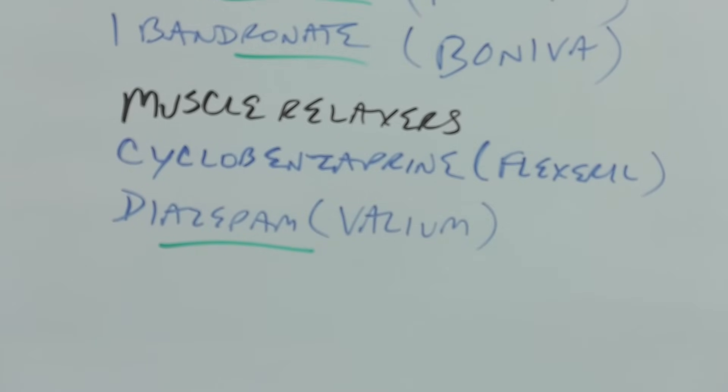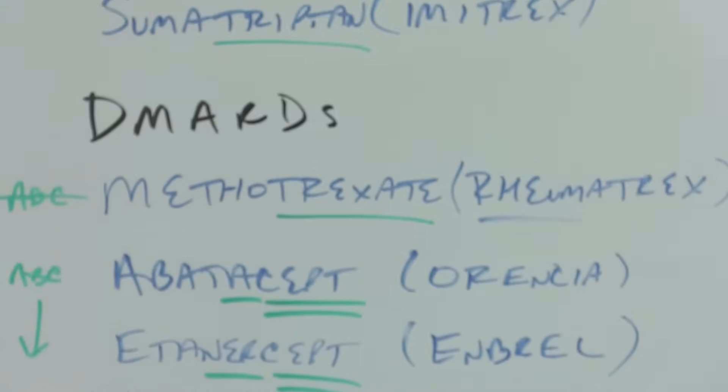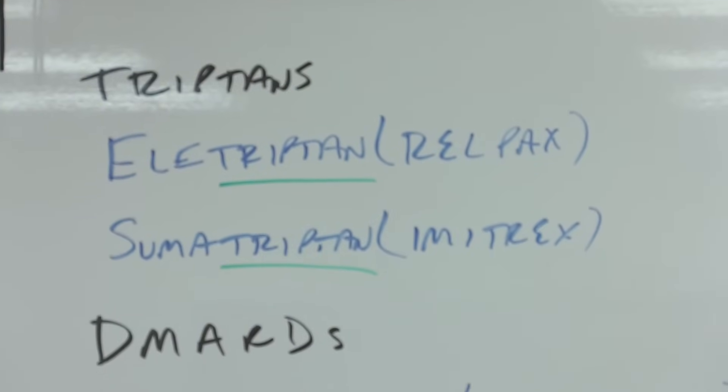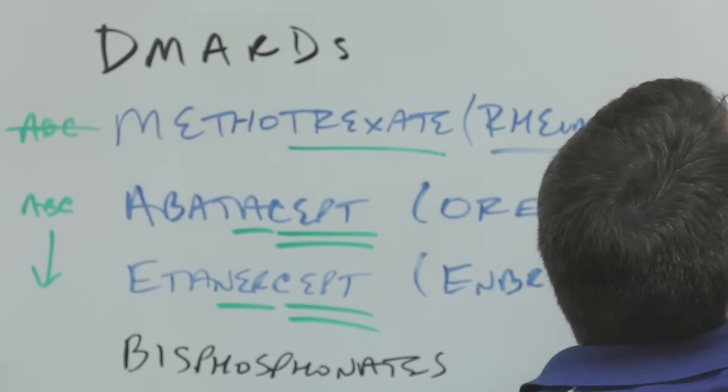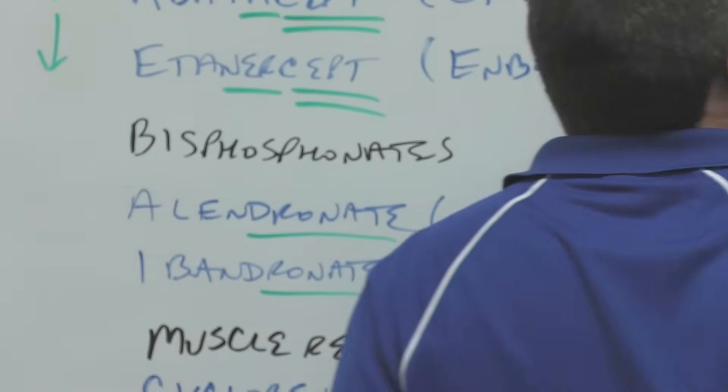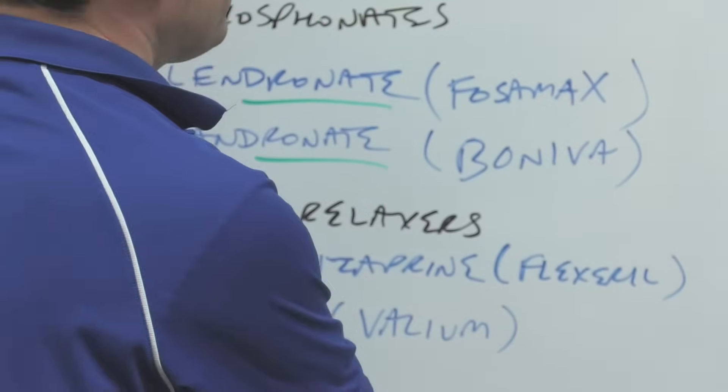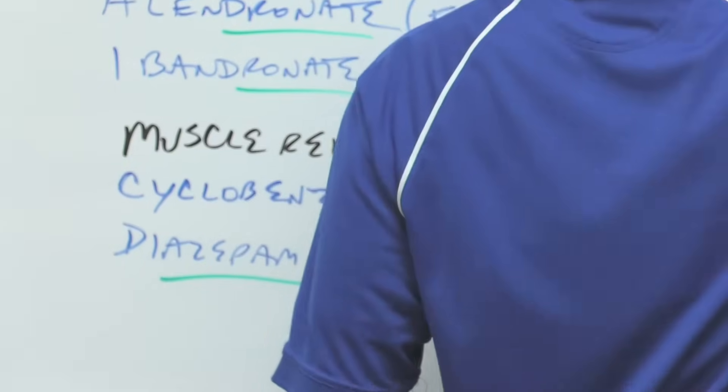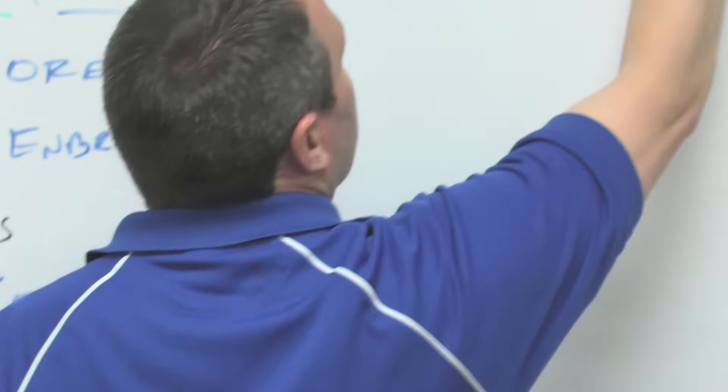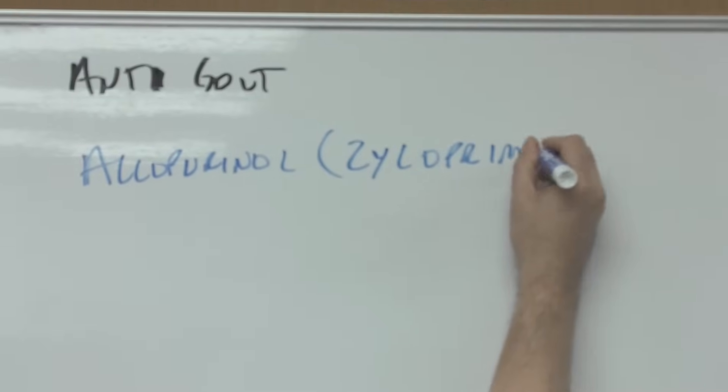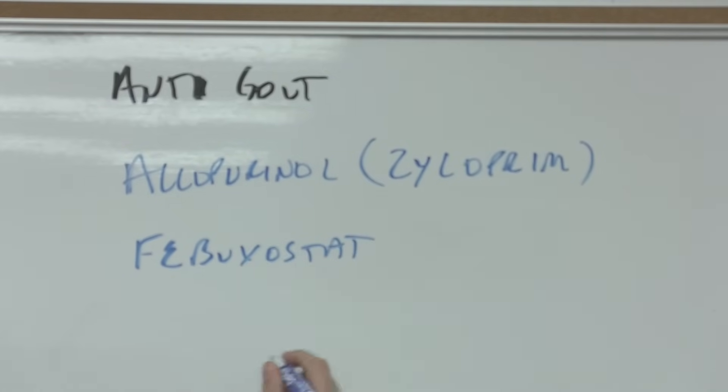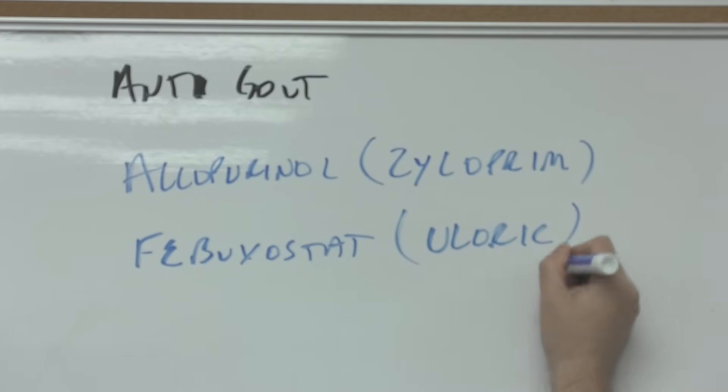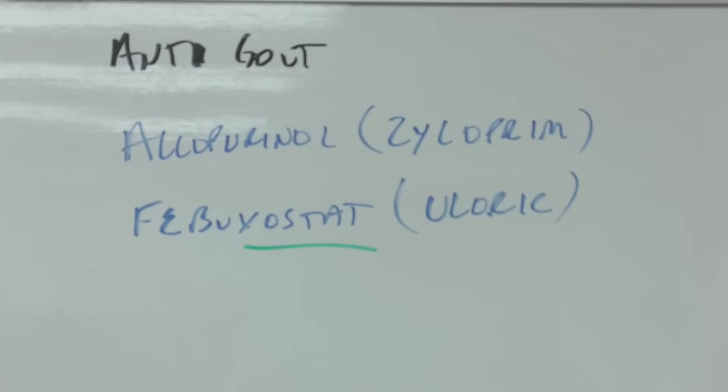We actually have one more set of drugs, but I want you to notice where we've gone. We started with the head, so triptans for headache, then we went into the joint, and then from the joint we went to the bone, and then out to the muscle. So you're thinking inside out, and I'll put it over here: anti-gout. So I'm going to have two anti-gout medications: allopurinol, which is Zyloprim, and febuxostat, which is Uloric, and the zostat is the stem.